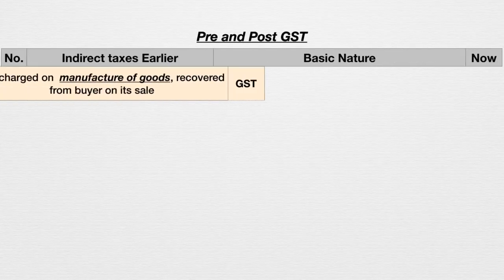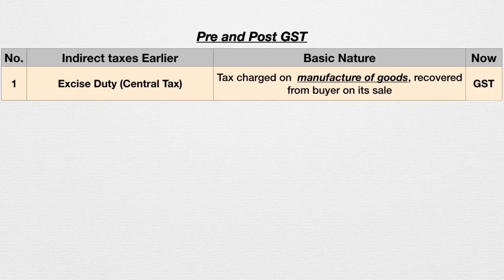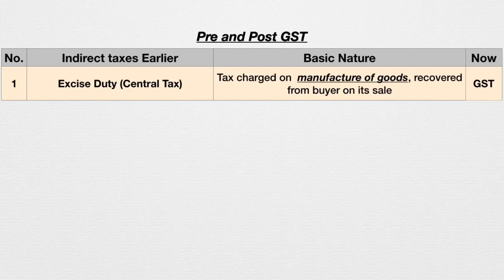First is excise duty — a central tax levied by the central government. Earlier we had excise duty, but now it got replaced with GST. The basic nature of excise duty is that it's a tax charged on manufacture of goods, recovered from the buyer on its sale. The manufacturer had to pay this excise duty to the central government for goods manufactured, recovering it from his customer on sale. Finally, the buyer bears the excise duty burden when they buy manufactured products.